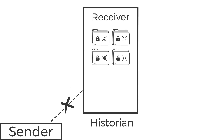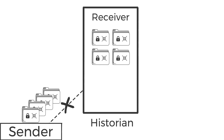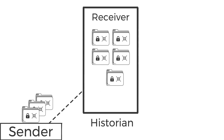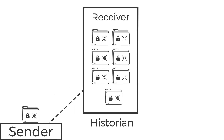If Sender and Receiver lose contact, or if Historian is offline, Sender will buffer your data locally. As soon as Historian's availability returns, your data backfills without any loss.